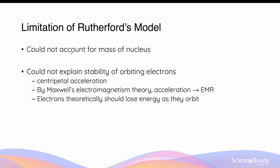Although Rutherford's model was a big improvement compared to Thomson's model in that it accounted for the observations of the gold foil experiment, it has two main limitations. The first limitation is that Rutherford could not account for the mass or the composition of the nucleus. Although he discovered the existence of protons later on, the total combined atomic mass of the nucleus was still unaccounted for, because the neutron was yet to be discovered.